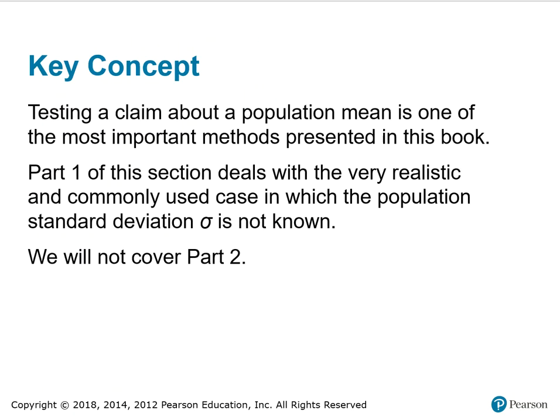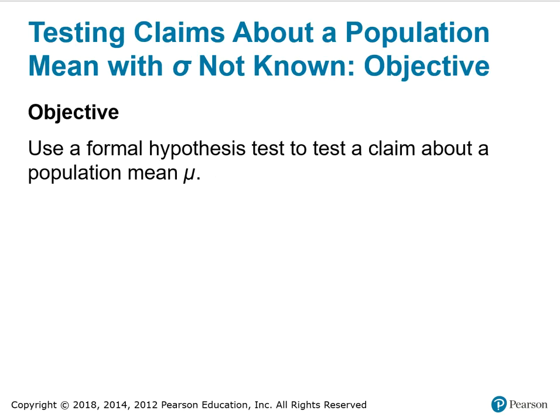Testing a claim about a population mean is one of the most important methods presented in the book. Part 1 of this section deals with the very realistic and commonly used case in which the population standard deviation, sigma, is not known. We will not cover part 2. The objective is to use a formal hypothesis test to test a claim about a population mean, mu.